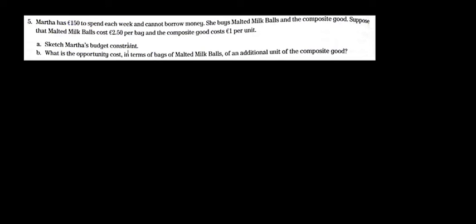Let's see what matters here. What's the data? We have 150 euros, that's our income, so that's going to be our M, our money to spend. We have the prices: the milk costs 2.50, the composite good costs 1.